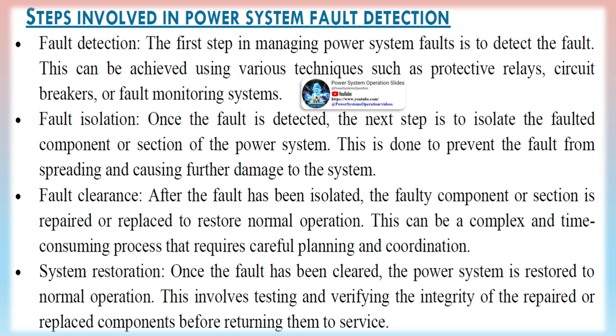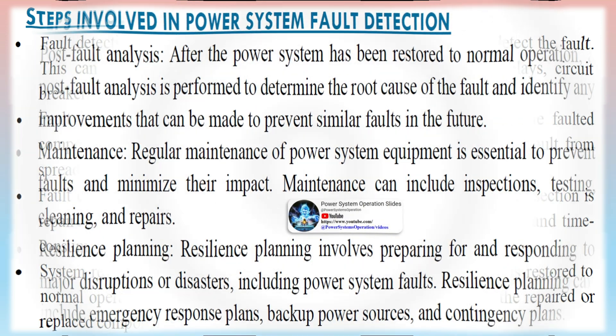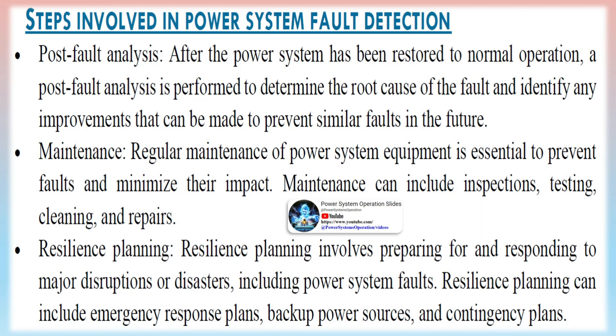Maintenance of power system equipment is essential to prevent faults and minimize their impact. Maintenance can include inspections, testing, cleaning, and repairs. Resilience planning involves preparing for and responding to major disruptions or disasters, including power system faults, and can include emergency response plans, backup power sources, and contingency plans.